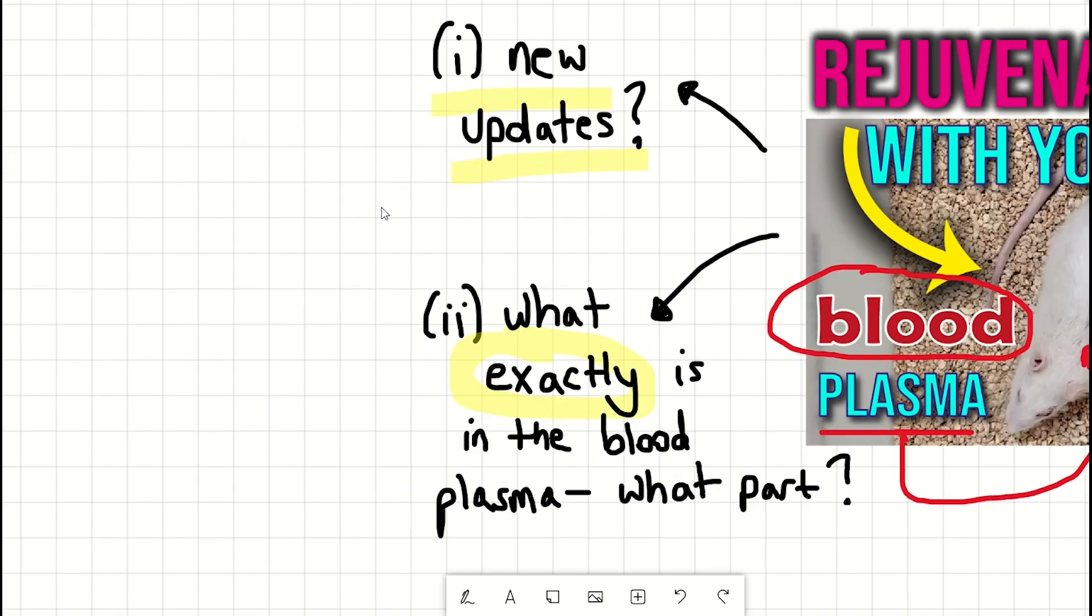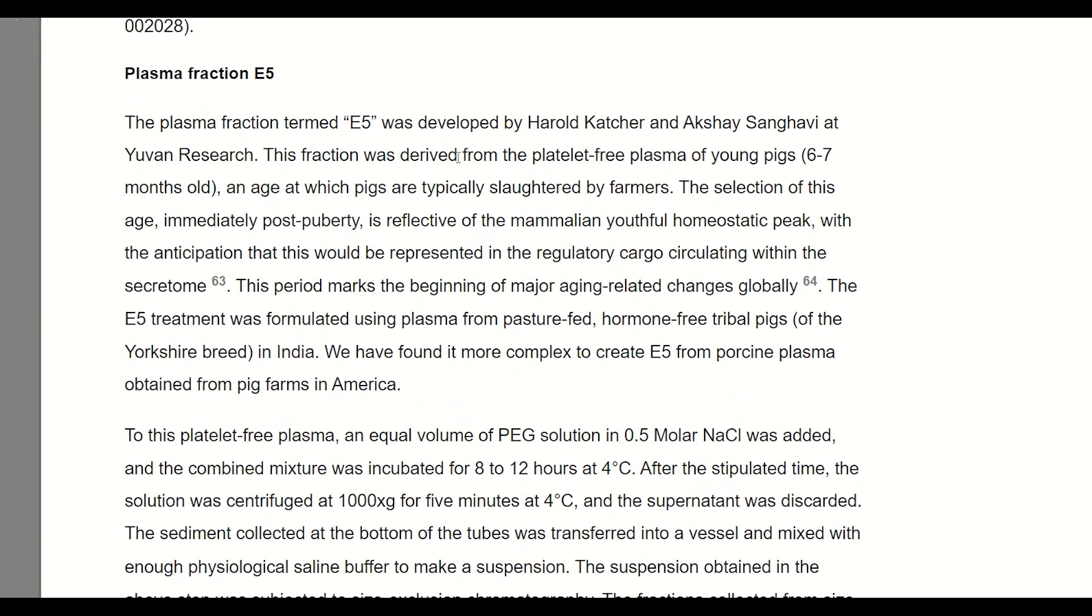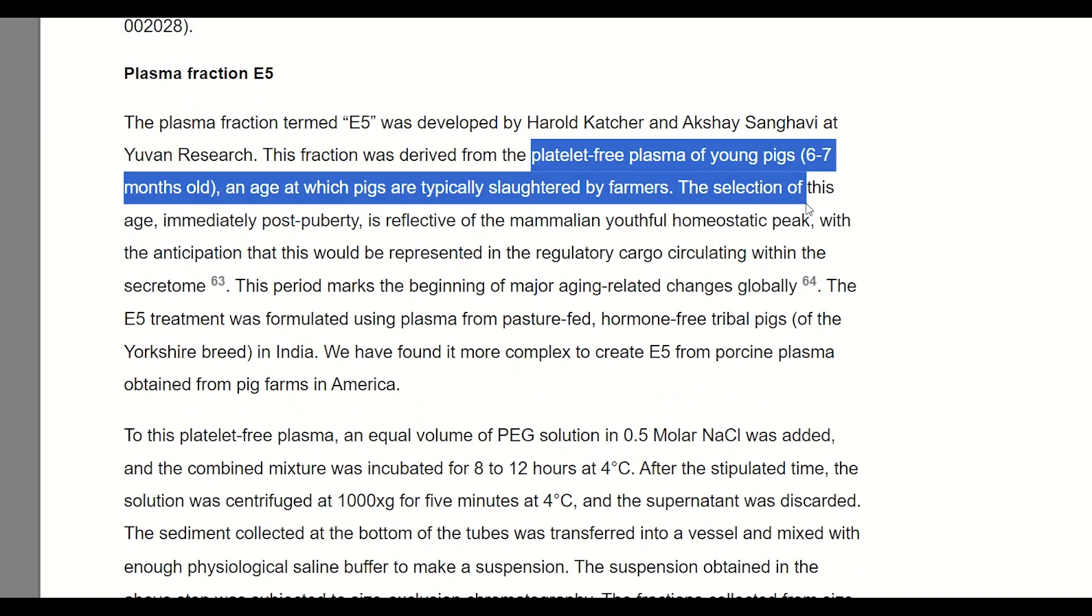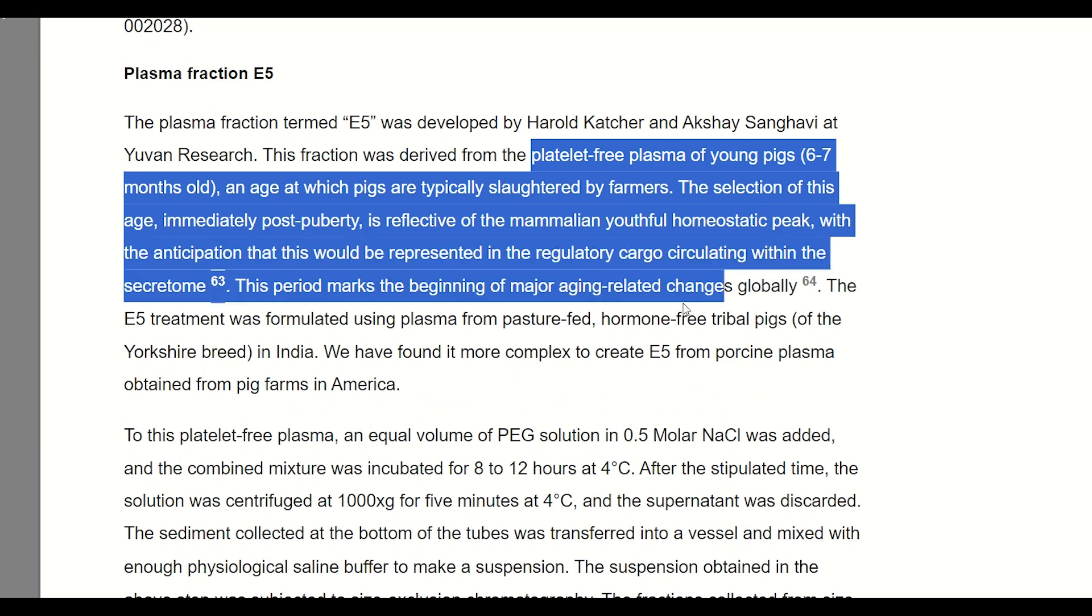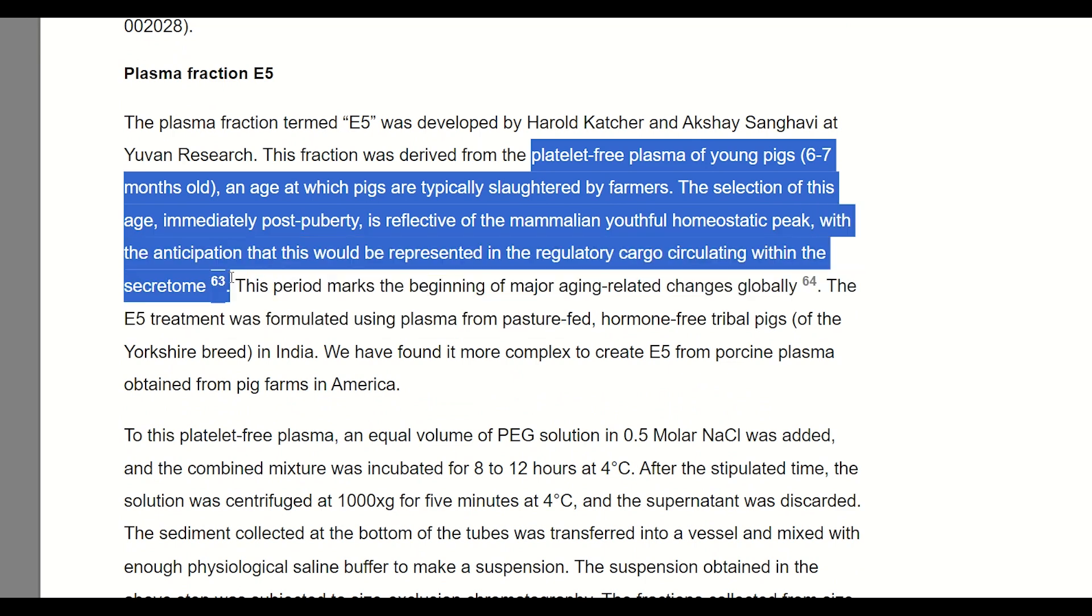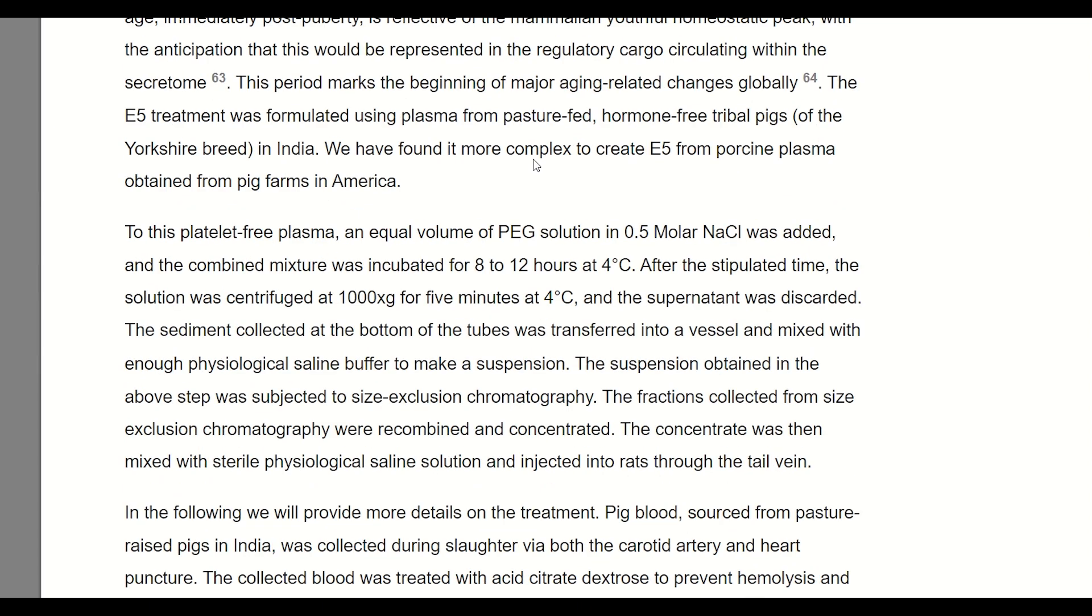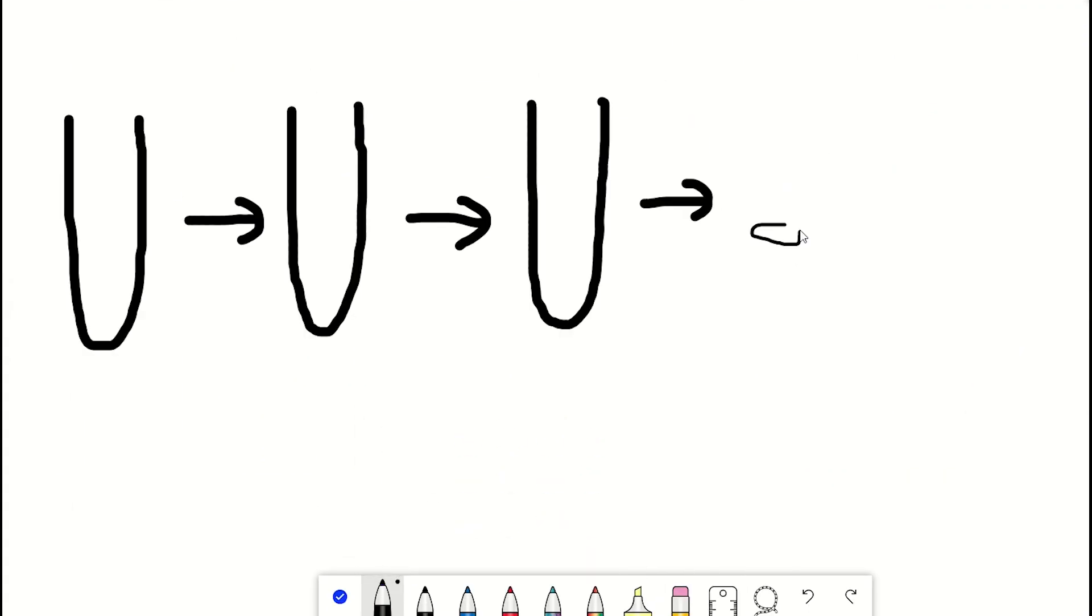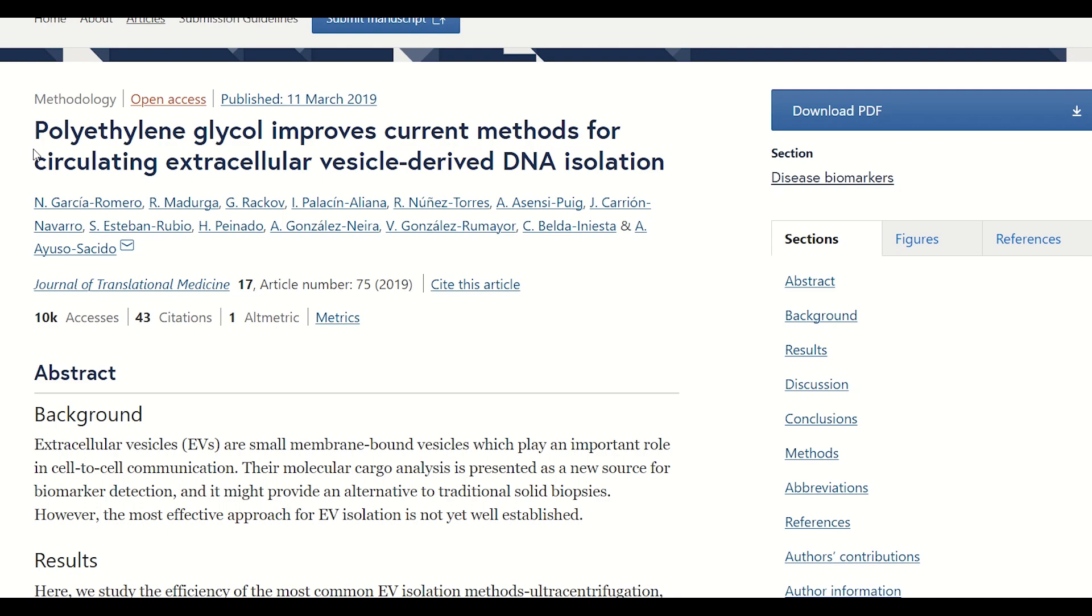Well, the plasma fraction that they termed E5 is the fraction derived from the platelet-free plasma of young pigs, six to seven months old, an age at which is, according to this article, reflective of the mammalian youthful homeostatic peak. And this paper now actually explains how exactly they extracted this E5 fraction. So following blood extraction from the pigs, they kept the plasma, and then they treated it with polyethylene glycol, PEG, which is a polymer that can be used to precipitate extracellular vesicles.